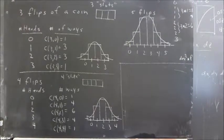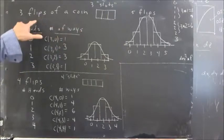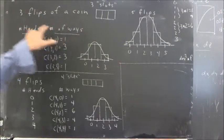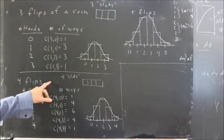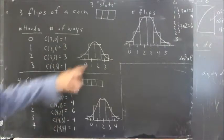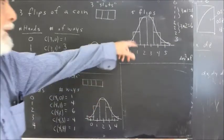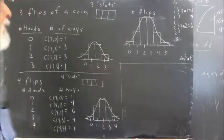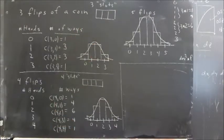In class today, we didn't follow the document for today's class very closely — we'll pick up on that next time. But we did try to make a table for three flips of a coin: number of heads, how many ways you can get that number of heads. Then we did the same for four flips and for five flips. We didn't list the table for five flips, so you should create your own table for five flips.